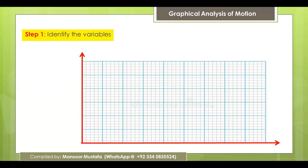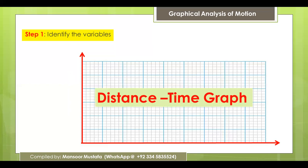After identifying the quantities, determine which one is independent and which one is dependent. The independent quantity is placed on the x-axis and the dependent quantity on the y-axis. For a distance-time graph, comparing time and distance — time is an independent quantity, because whether the object is moving or not, time continues.